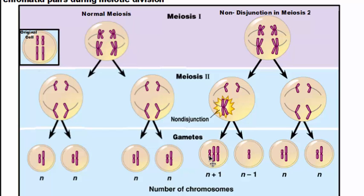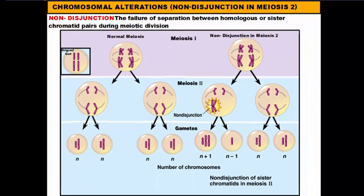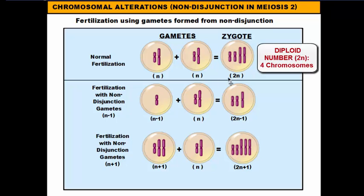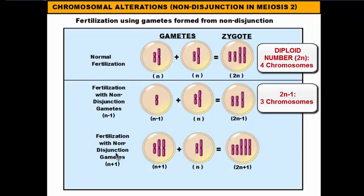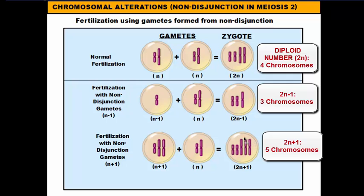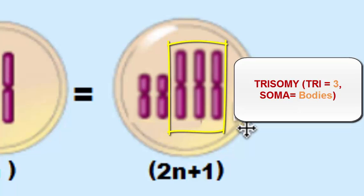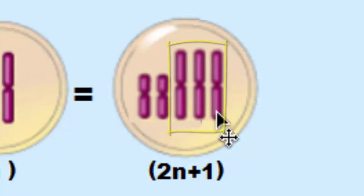Let's take a look at what happens when these gametes meet each other and create a zygote. At the top we have normal fertilization — regular haploid gametes form our normal diploid number. But a nondisjunction gamete missing a chromosome can fuse with an egg to form a zygote that's one less than the diploid number. Or a nondisjunction gamete with an extra chromosome will fertilize the egg, and you'll get a normal pair plus a group of three chromosomes that are the same. This is called trisomy — tri meaning three and soma meaning body, literally three bodies.